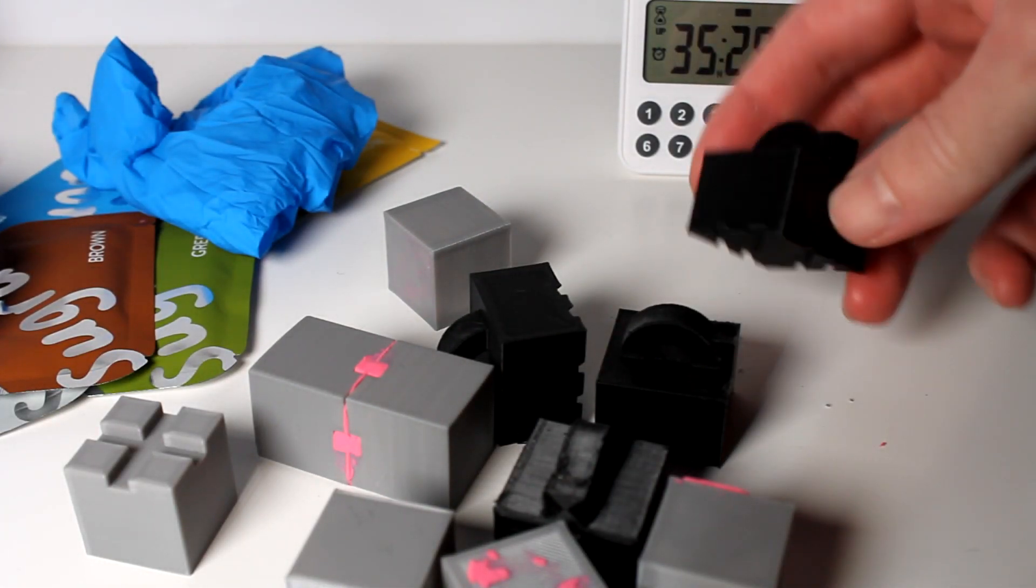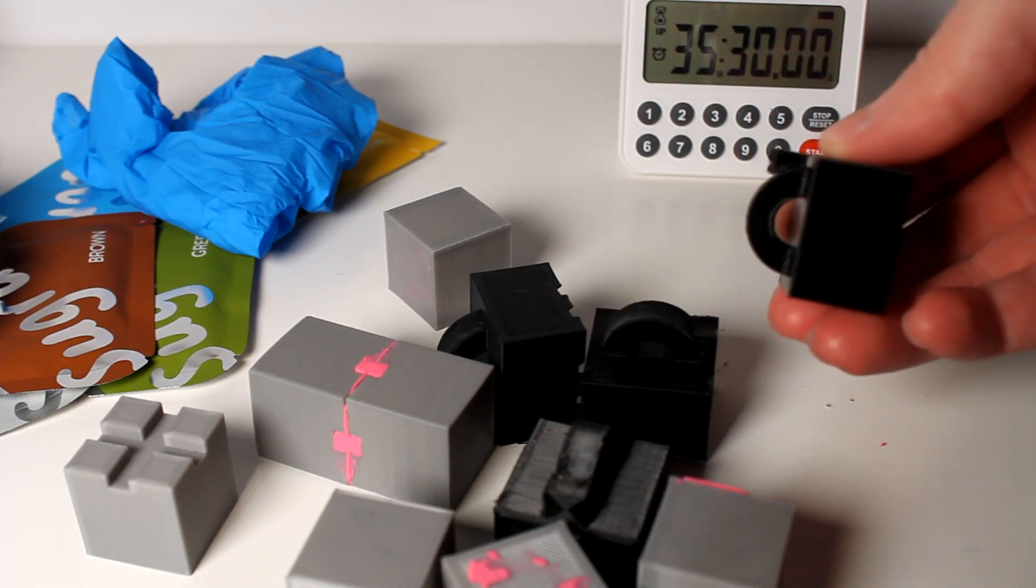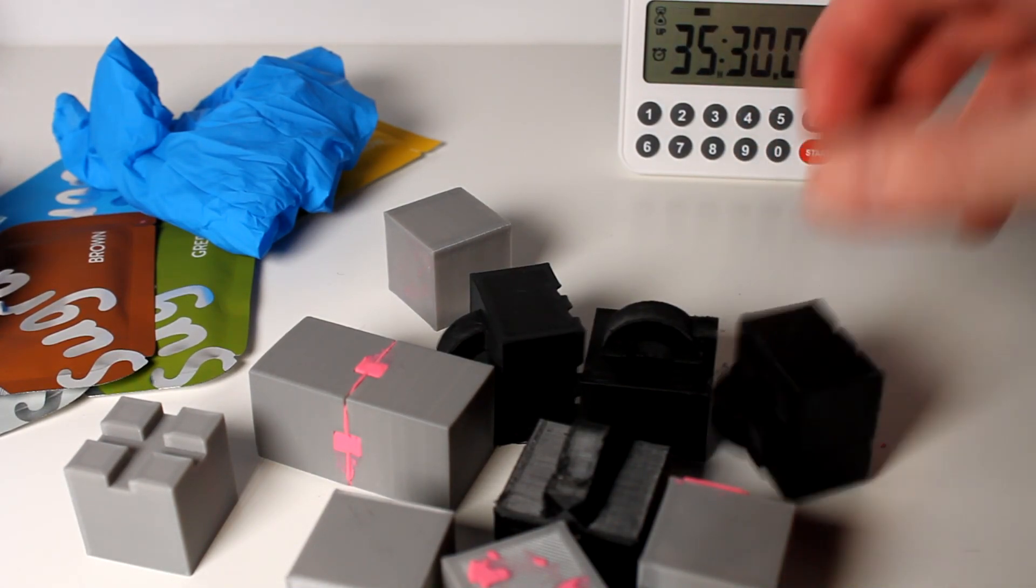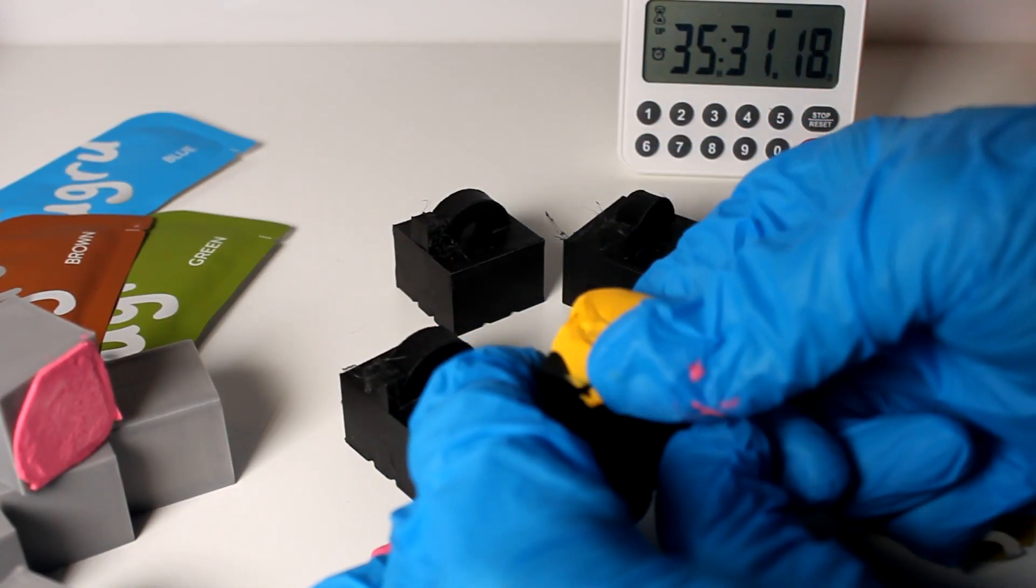So here they are finished. I've put diagonal grooves in these ones, the reason for that was because it just meant I could print them on their sides without supports. Once again I put Sugru on one side, pushed them together very firmly and restarted the timer.